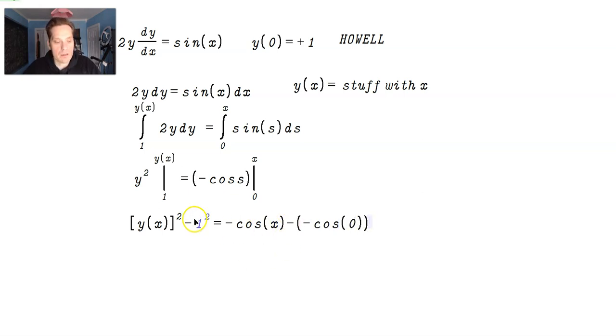In the middle, I have two negatives, one from -cos and also one from the formula. So now you're going to have [y(x)]^2 - 1 = -cos(x) + 1, because the two negatives give a positive and cos(0) = 1.